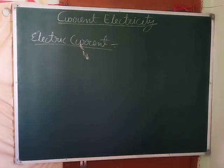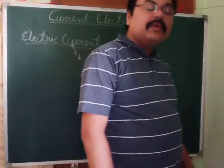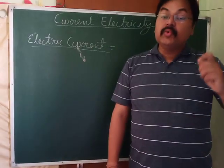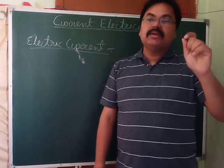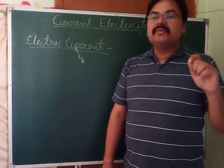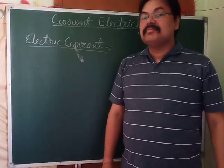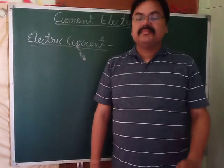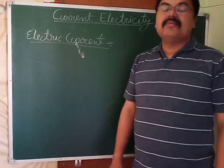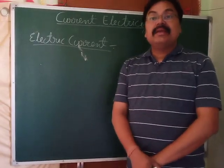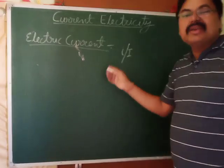Write the heading. The amount of charge flowing through a particular cross section of a conductor per unit time is called electric current. It is denoted by small i or capital A. No problem.